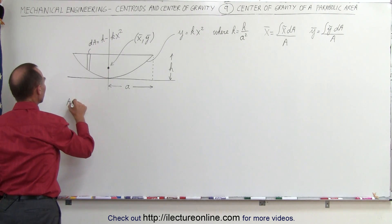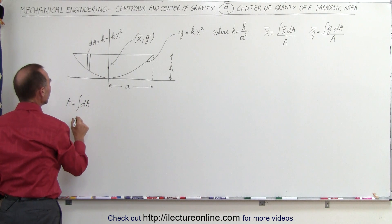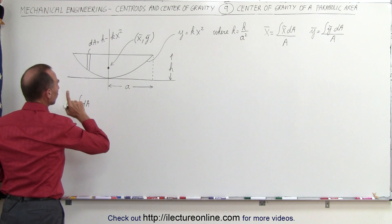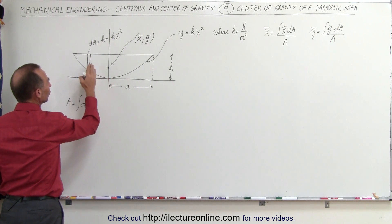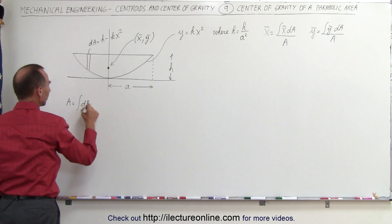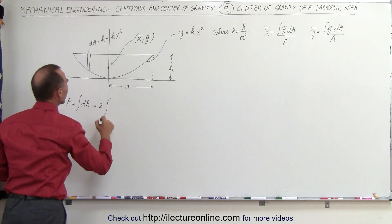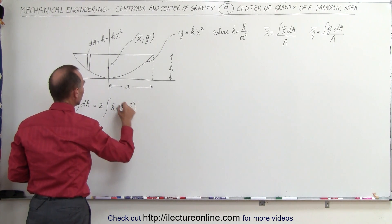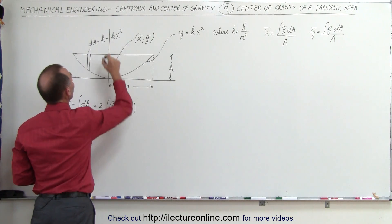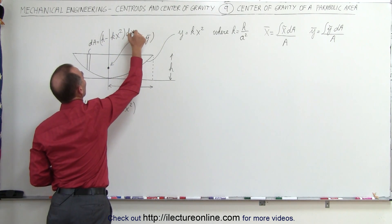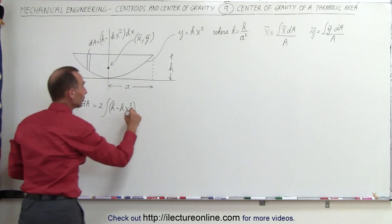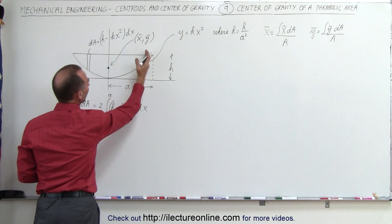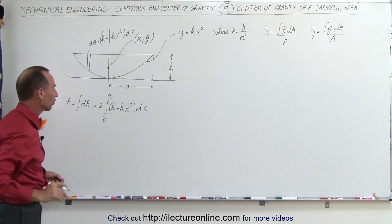To find the total area, that's going to be equal to the integral of all the dA's. We're going to integrate from 0 to a in the x direction. But notice we're going to multiply by 2 because we want both halves. So the total area is 2 times the integral from 0 to a of (h - kx²) dx — we take half the area and then double it.